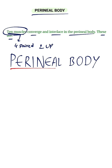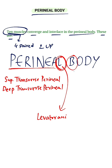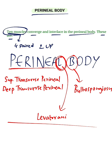Remember the word perineal. The four paired muscles are: Superficial transverse perineal muscle, Deep transverse perineal muscle, Levator ani, and Bulbospongiosus. These four are paired muscles — two superficial transverse perineal muscles, two deep transverse perineal muscles, two levator ani, and two bulbospongiosus.